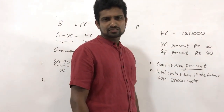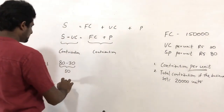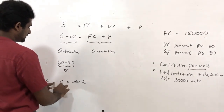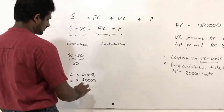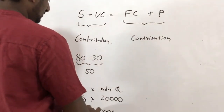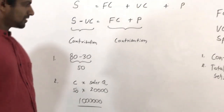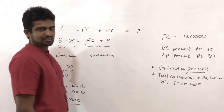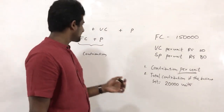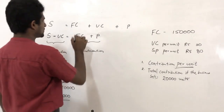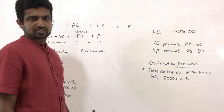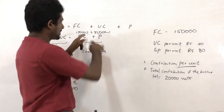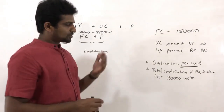That's 50 — the answer for question one. Question two: total contribution if the business sells 20,000 units. The easiest way is contribution per unit 50 multiplied by sales quantity 20,000, giving an answer of 1 million. You might have used the other approach — fixed cost plus profit — but that is harder. Taking fixed cost as 150,000 and adding profit of 850,000 also gives 1 million, which is the same answer.